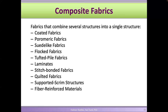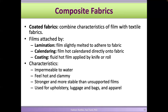Composite fabrics include coated fabrics, poromeric fabrics, suede-like fabrics, flocked fabrics, tufted pile, laminates, stitch-bonded, and quilted fabrics — all of these use more than one type of textile combined together. Coated fabrics are usually fabrics that have a regular base, like a woven or knit base, coated with a film.